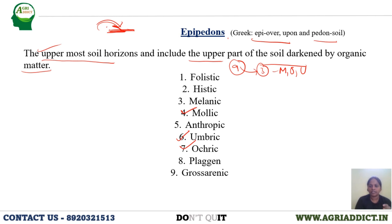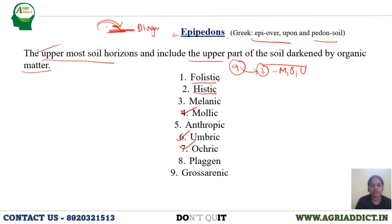For example, if we see folistic and histic epipedons, we should learn them by comparison. These epipedons are also called diagnostic surface horizons.